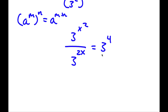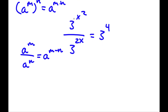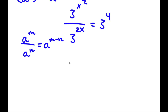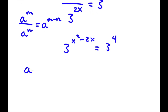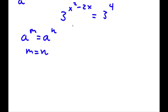So now if you notice, all our bases here are all 3, and this actually makes it much simpler to solve. Another property of exponents is that if I have something in the form a to the power of m over a to the power of n, this is equal to a to the power of m minus n. So 3 to the power of x squared over 3 to the power of 2x equals 3 to the power of x squared minus 2x. This is equal to 3 to the power of 4. So now if a to the power of m equals a to the power of n, then m equals n. So x squared minus 2x is equal to 4.